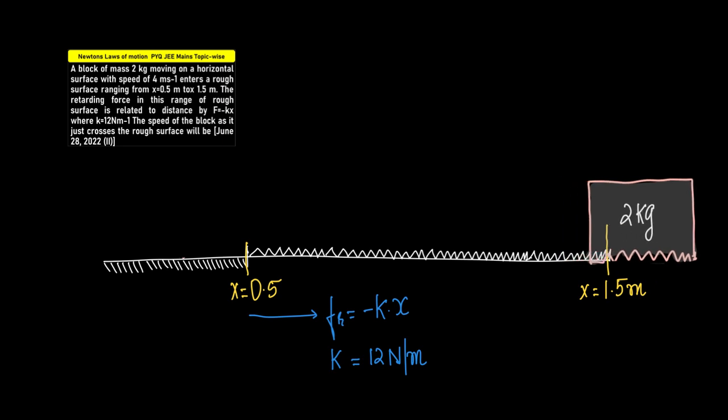So the question is how do we approach the solution? What we need to understand here is what are we given. We have been given x1 which is equal to 0.5, we have been given x2 which is also equal to 1.5, which means we can find out delta x which is nothing but x2 minus x1.